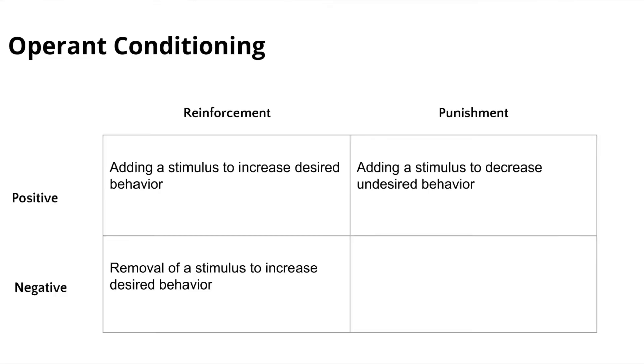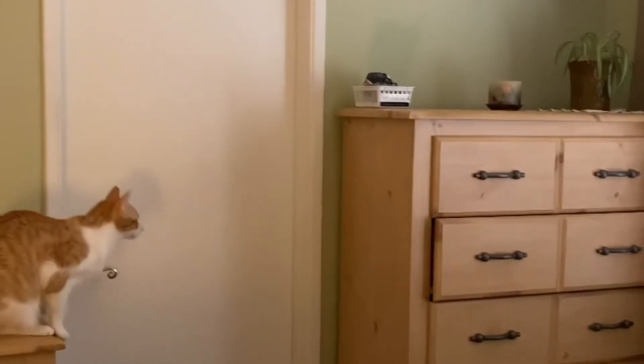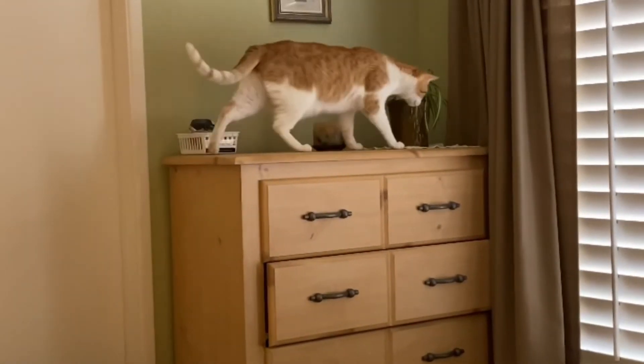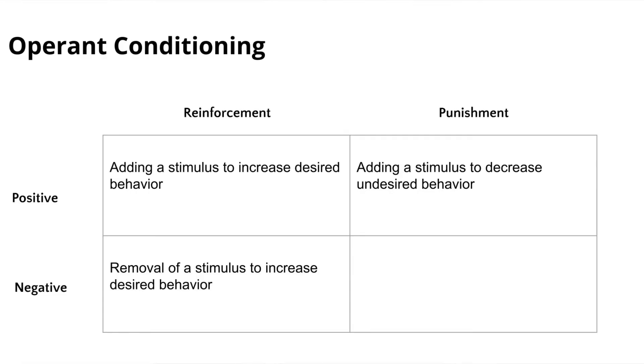Both positive and negative punishment seek to decrease behavior. Positive punishment is the addition of something undesirable as a consequence of negative behavior. Loki loves my house plants and will go and try to chew on them. When he tries to eat my plants I have something loud nearby — like my keys — and I shake it, it makes a loud noise, and he stops chewing on my plant. That's the addition of something undesirable — the loud noise — as a consequence of the negative behavior of chewing on my house plants.